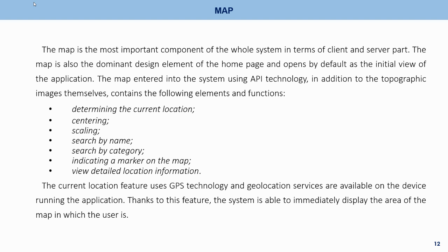Map. The map is the most important component of the whole system in terms of client and server part. It is also the dominant design element of the home page and opens by default as the initial view. The map, entered into the system using API technology, contains the following elements and functions: determining the current location, centering, scaling, search by name, search by category, indicating a marker on the map, and view detailed location information. The current location feature uses GPS technology and geolocation services available on the device.